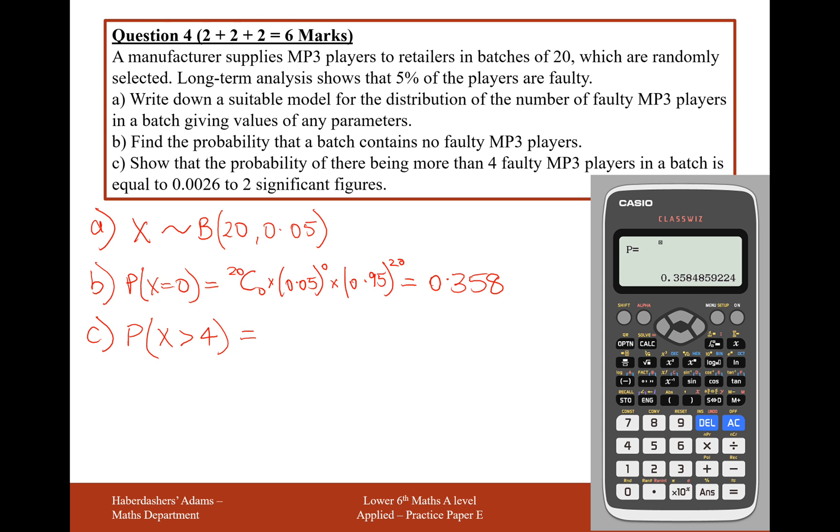The way we calculate this is the calculator doesn't have a button to work out greater than probabilities. So what we're going to have to do is think about 0 faulty players, 1 faulty player, 2 faulty players, 3 faulty players, 4 faulty players, 5 faulty players, 6 faulty players or more. We want there to be more than 4 faulty players, so what we don't want is the probability of 0 faulty players up to 4 faulty players.